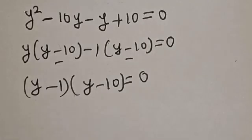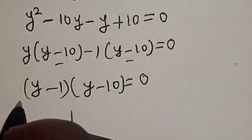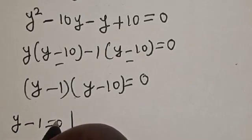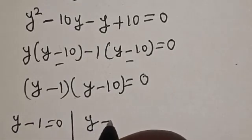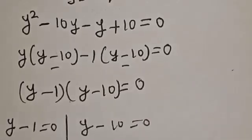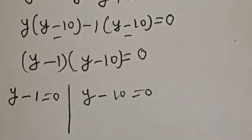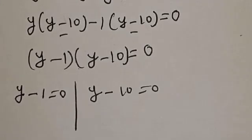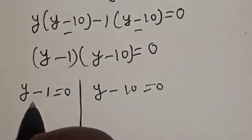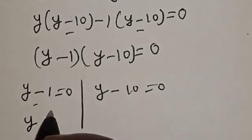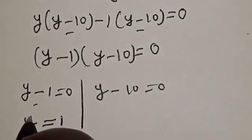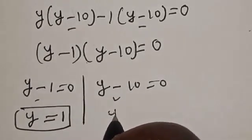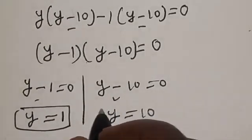We have (y minus 1) multiplied by (y minus 10) is equal to 0. So, there are two cases here: y minus 1 is equal to 0, and y minus 10 is equal to 0. Then, y is equal to 1, and also y is equal to 10.